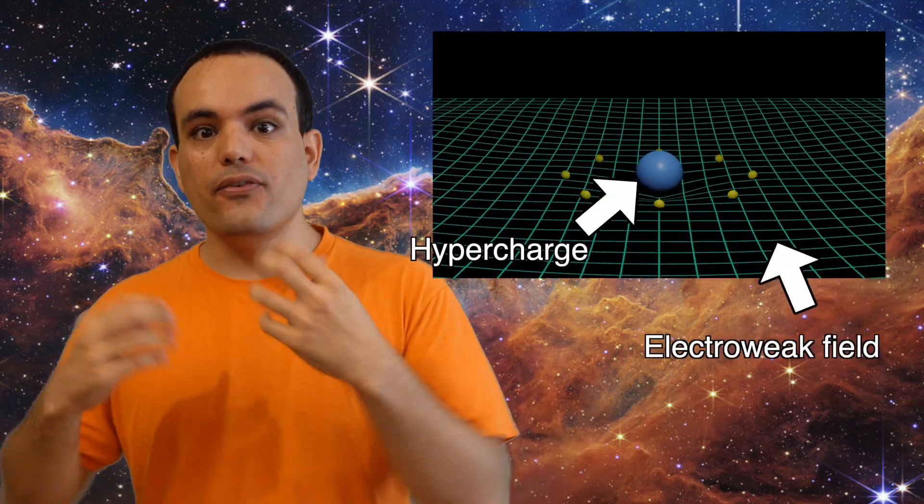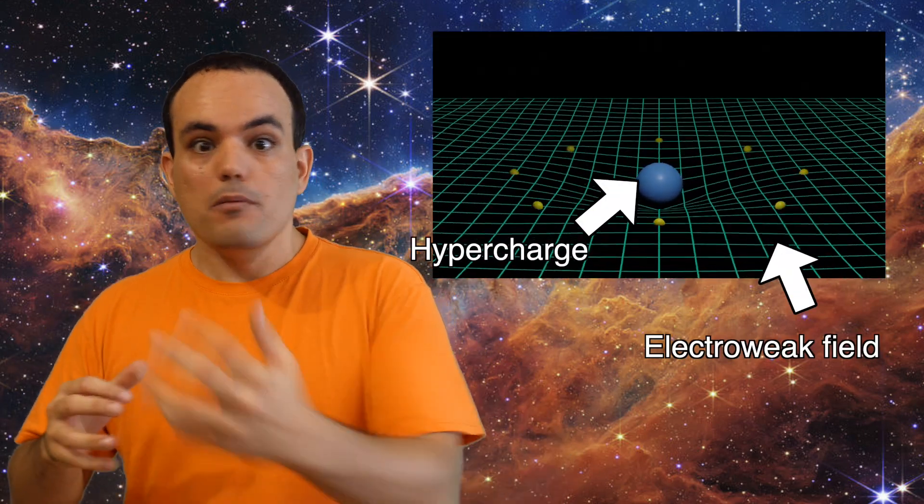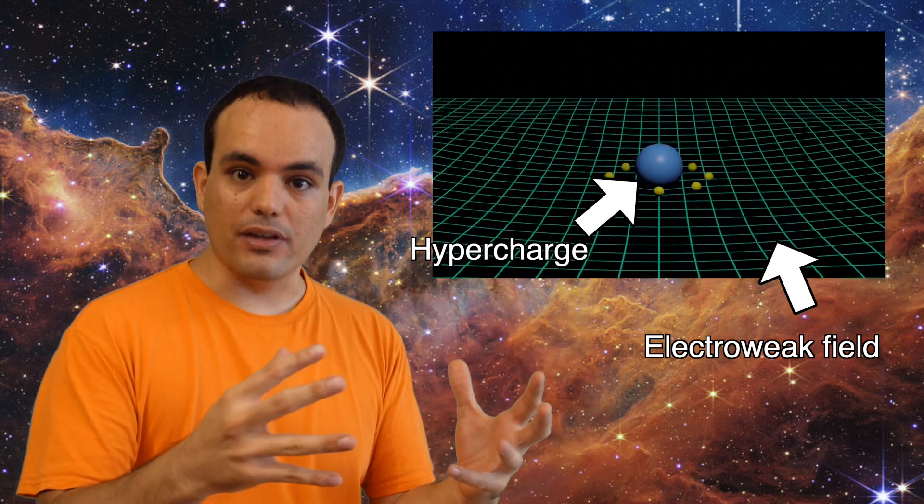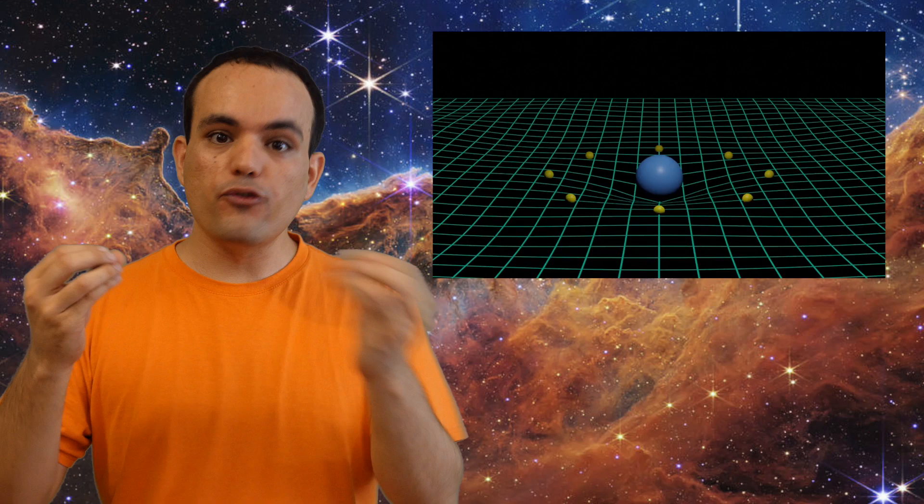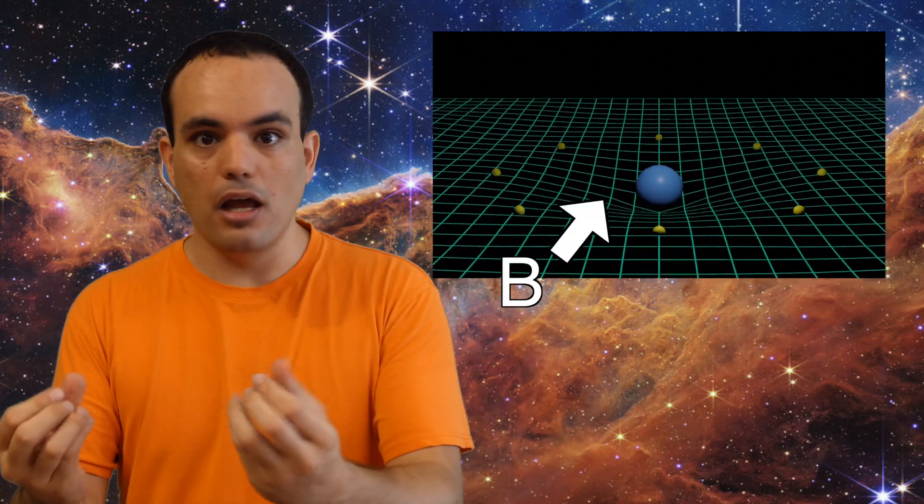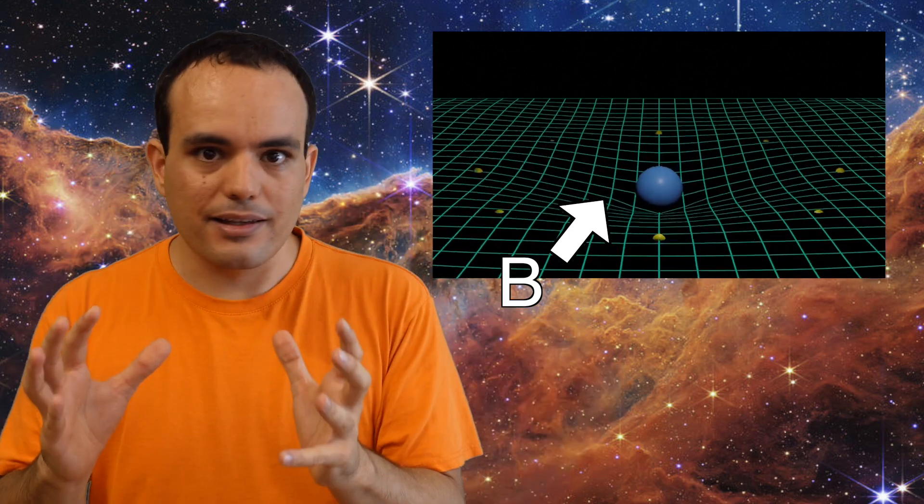Look, back when the universe was young and hot, with a life full of dreams ahead of it, there used to be a force known as electroweak, and particles would create electroweak fields with their hypercharges, much like how today they create electric fields with their electric charges. But instead of exchanging photons of light, they would exchange a particle known as B, but it was almost exactly as a photon.